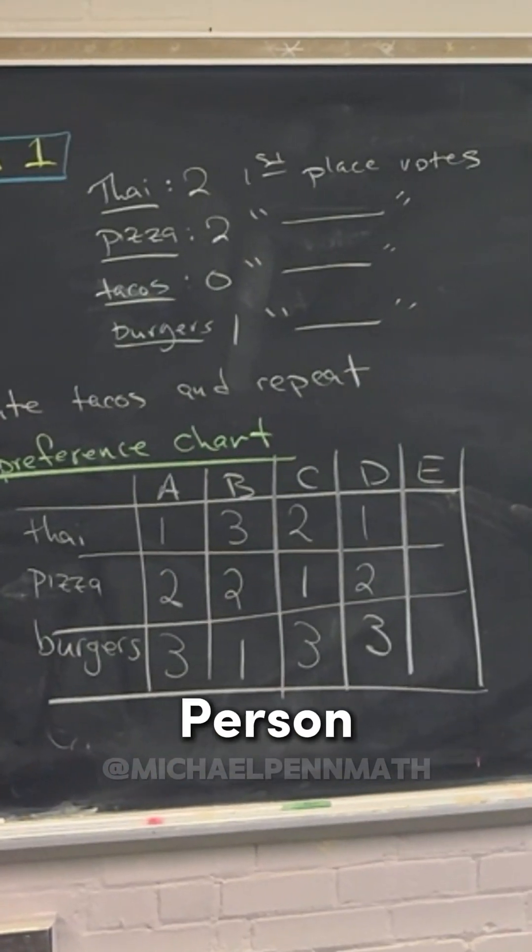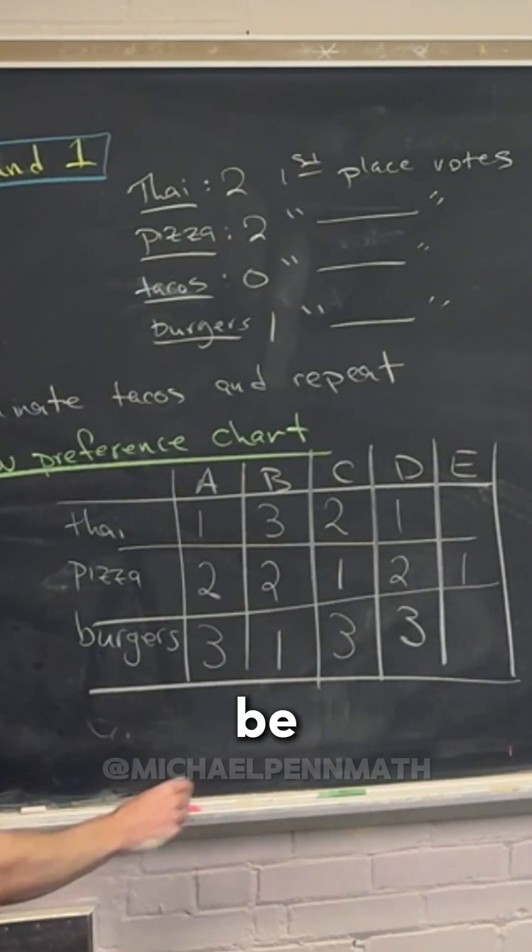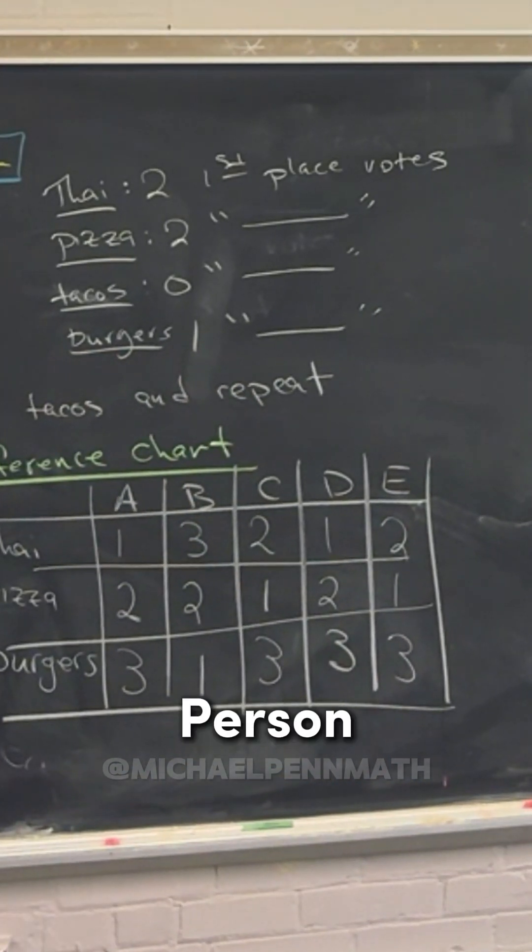Let's see. Person D, that'll be one, two, three. And then person E, well let's see. Pizza was number one, and then let's see, it's going to be two and three. Person E was the same thing as person C, right?